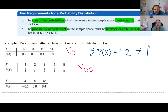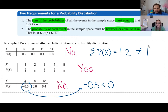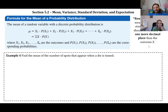The second example has fractions 1/4, 1/8, 3/8, 1/8, and 1/8 — all between zero and one — and they add up to exactly one. Yes, that is a probability distribution. The third example has a negative value, −0.5. There's no such thing as a negative probability, so that is not a probability distribution, even though the remaining values do add up to one. You must check both requirements.